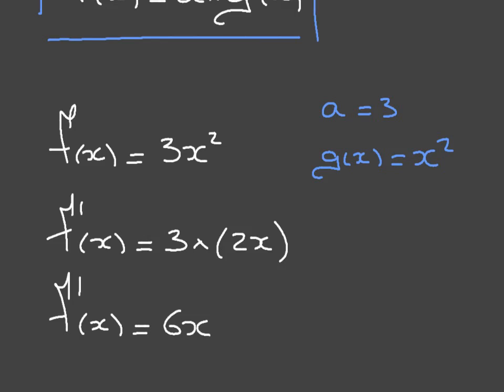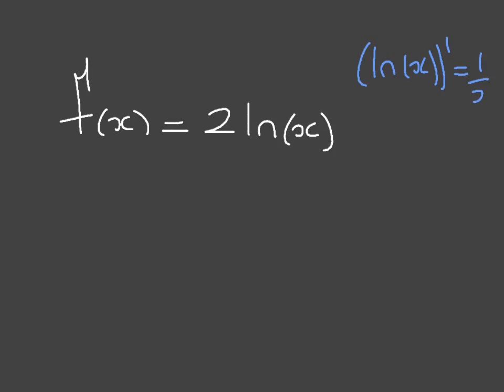Let's look at another example. Let's say we were given the function f of x equals 2 ln of x. Now remember, we saw in one of the previous videos that the derivative of ln of x is equal to 1 over x. So using that, and using the constant rule we just learned,